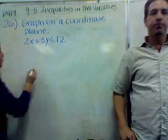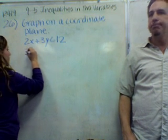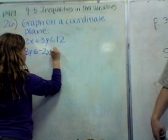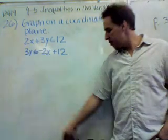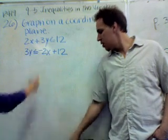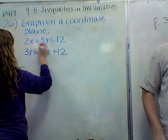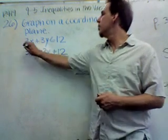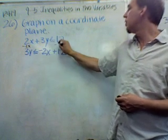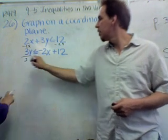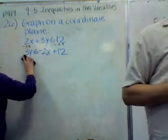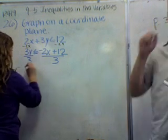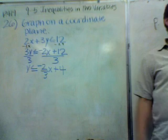What would we do if that were an equal sign? You try to get 3y by itself. That's right. Subtract 2x from both sides. And that's what we do here as well. We subtract 2x on both sides. You can just show that right here. Minus 2x. Now, we divide by 3. And then we get y is less than or equal to negative 2 thirds x plus 4.